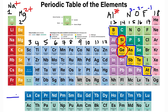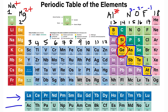Over here, you have the lanthanides and the actinides. The lanthanides should be after barium, starting with element 57. After element 88, you have the actinides, which start at element 89.